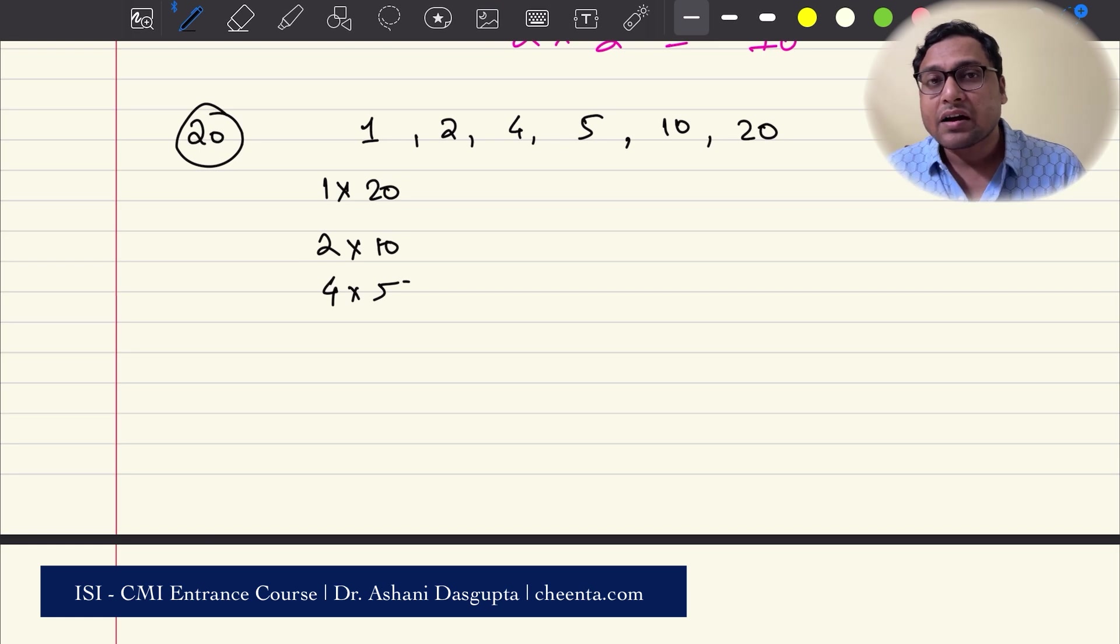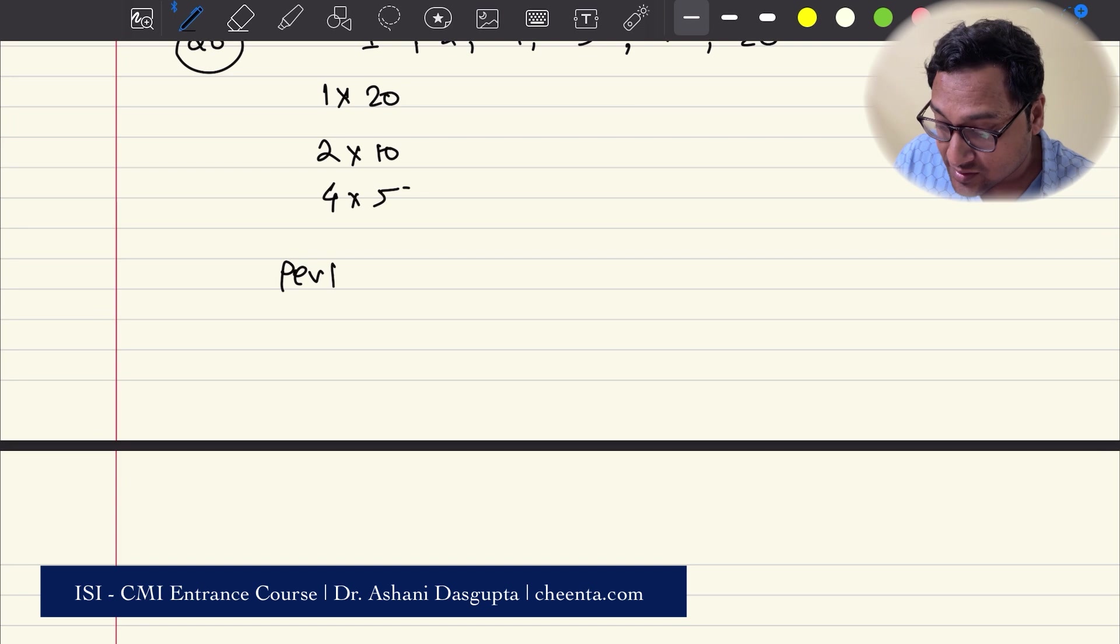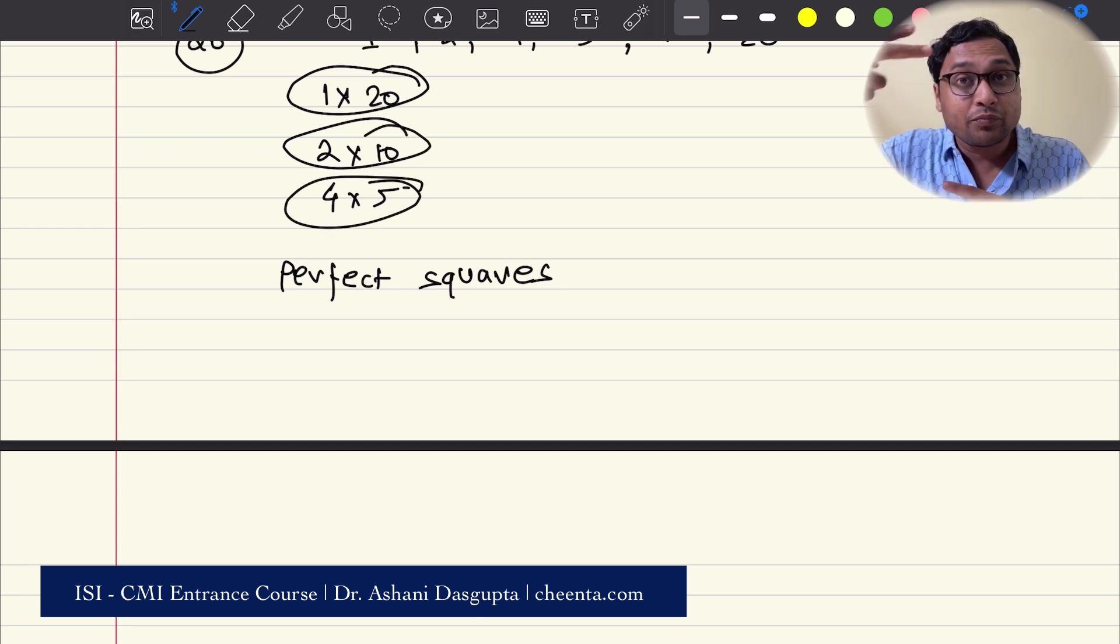When the divisors are coming in pairs, what is the situation where the number of divisors is 27 or odd? That happens only when you are working with perfect squares. In general, divisors will come in pairs. So there are even number of divisors. But in the case of a perfect square, what happens is one pair will have both numbers the same.